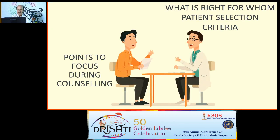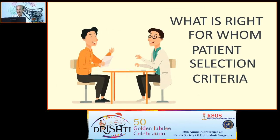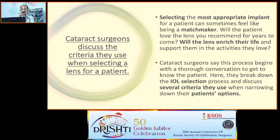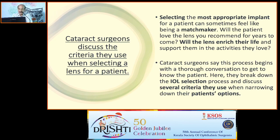The next division is patient selection criteria — the right IOL for whom. This depends on the patient's personality, their near and far vision priorities, value determination, pre-operative refractive errors, age of the patient, ocular comorbidities, and previous refractive surgery. Selecting the most appropriate implant for a patient can feel like matchmaking — will the lens enrich their life and support them in activities they love? This process begins with a thorough conversation, after which the IOL selection process becomes easier.